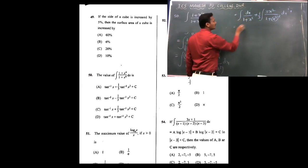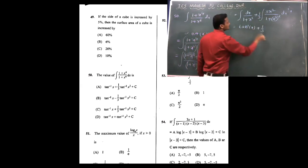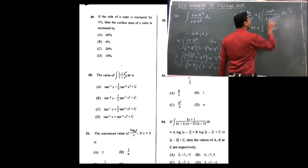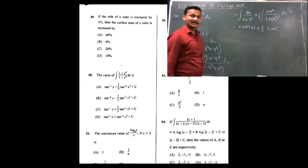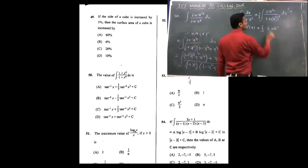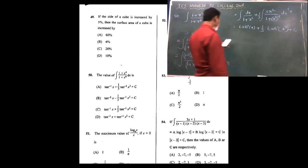So integration of 1 upon (1 + x²) is tan inverse x, plus 1/3 as it is. It is tan inverse of x³. If you substitute x³ equals to t, you get 3x² dt upon (1 + t²). Integration of 1 upon (1 + t²) is tan inverse of t. t value is x³, so the answer is tan inverse(x³) + c. This is the required answer.